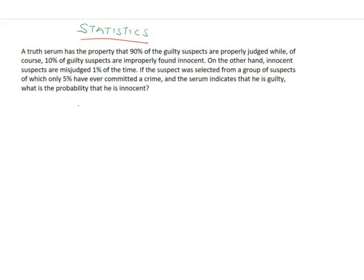Here is the question we are to solve in this video. A truth serum has the property that 90% of the guilty suspects are properly judged, while 10% of the guilty suspects are improperly found innocent. On the other hand, innocent suspects are misjudged 1% of the time. If the suspect was selected from a group where only 5% have ever committed a crime, and the serum indicates he is guilty, what is the probability that he is innocent?